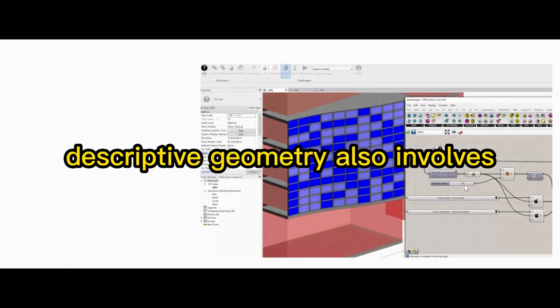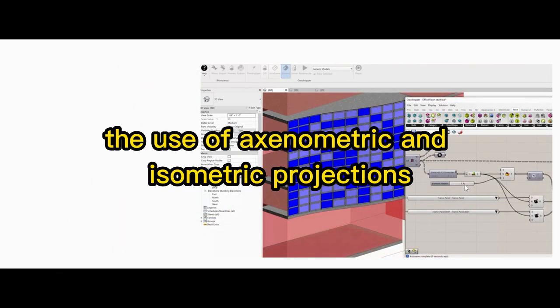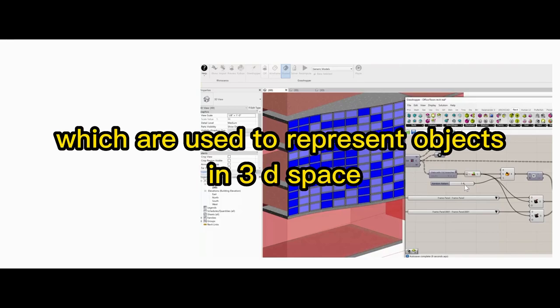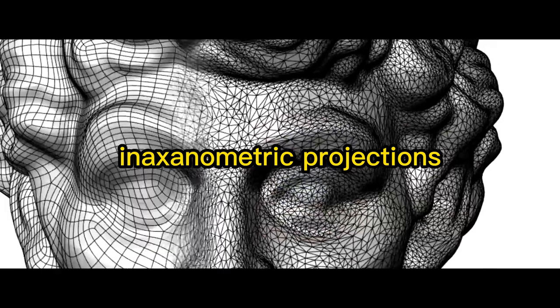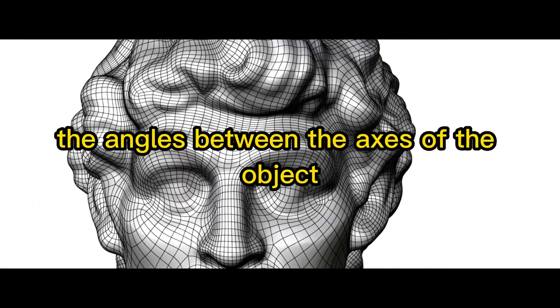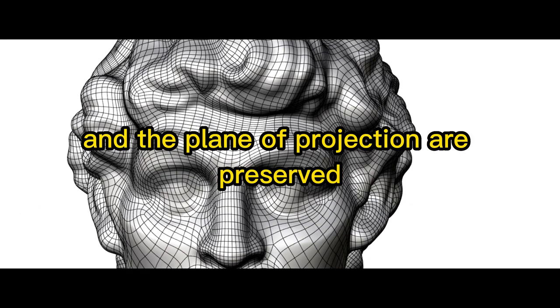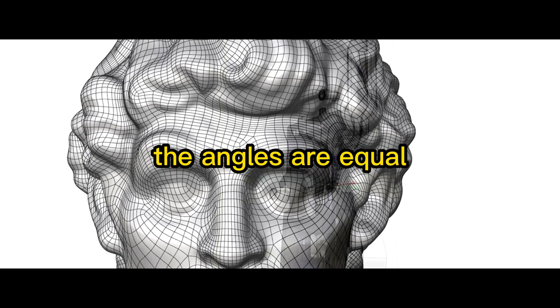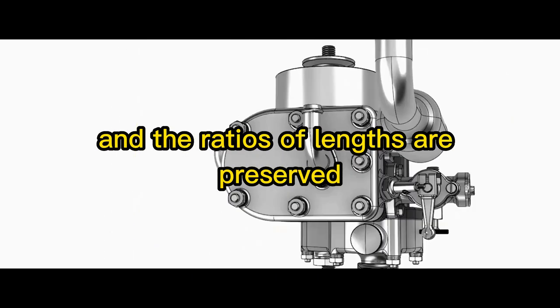Descriptive geometry also involves the use of axonometric and isometric projections, which are used to represent objects in 3D space. In axonometric projections, the angles between the axis of the object and the plane of projection are preserved, while in isometric projections, the angles are equal and the ratios of lengths are preserved.